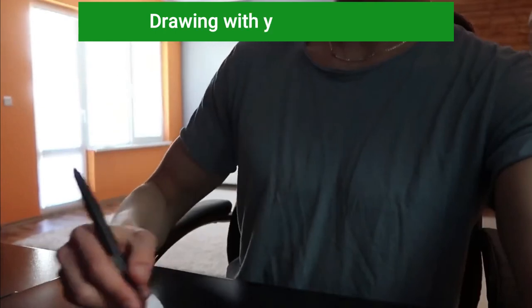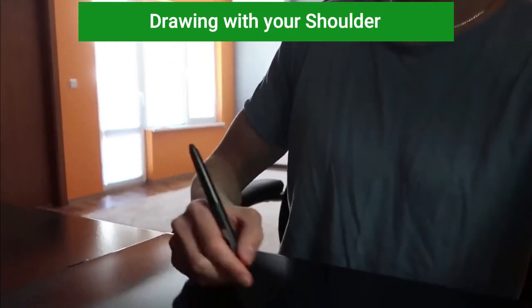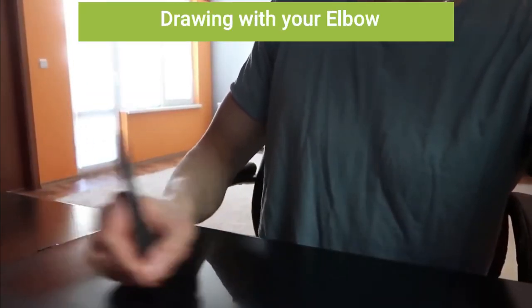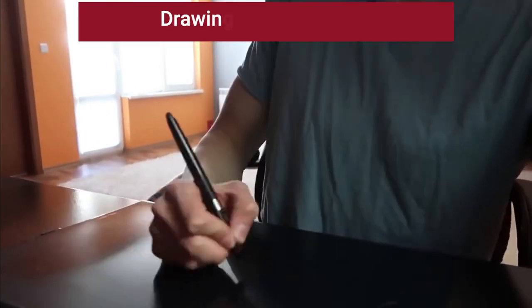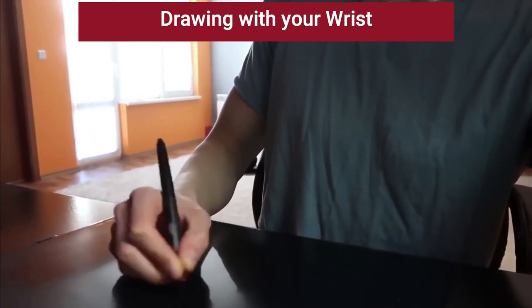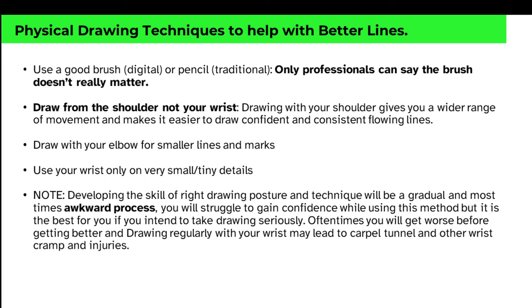If you try to go past the range of your wrist, you end up with wobbly-looking lines. But if you draw with your shoulder or elbow, you get a much wider range of motion — you draw longer, bigger lines and much more perfect circles. Draw with your elbow for smaller lines and marks, and use your wrist only on very small, tiny details. Developing the skill of correct drawing posture and technique will be a gradual and awkward process.